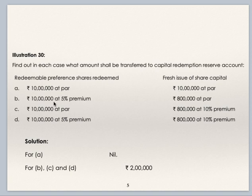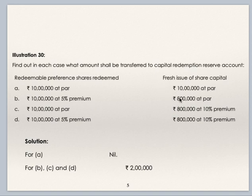Case 2: redeemable preference shares to be redeemed is 10 lakhs at 5% premium, and fresh issue of share capital is 8 lakhs at par. When shares are redeemed at premium, capital account is debited with 10 lakhs and premium on redemption debited with 5% of 10 lakhs. But debit to capital is 10 lakhs and credit to capital by fresh issue is 8 lakhs. So reduction in capital is 2 lakhs — therefore 2 lakhs gets transferred to CRR.